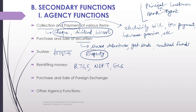Another agency function is the purchase and sale of foreign exchange. Your domestic currency is rupees. Any currency other than domestic currency, of other countries outside India, is known as foreign currency. For India, foreign currency includes the dollar, pound, yen, and all currencies related to outside countries — they are all foreign currency for India. You may sometimes need to sell or buy foreign exchange, and for that you can take the help of a commercial bank. So this is another agency function of the commercial bank.